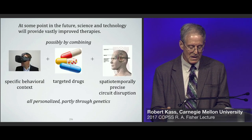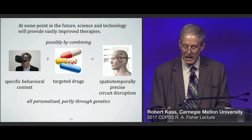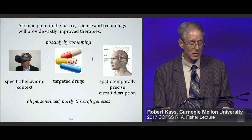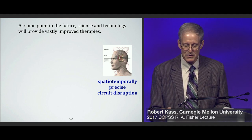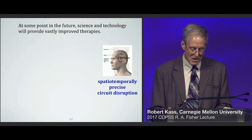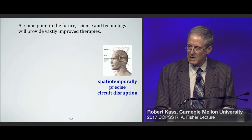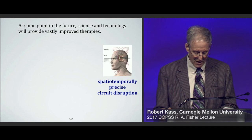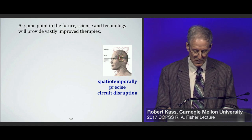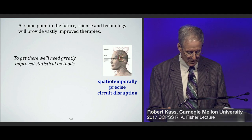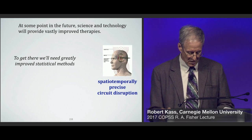We can expect there to exist technologies that combine specific behavioral contexts — perhaps using virtual reality — together with targeted drugs and spatiotemporally precise disruption of neural circuits, all personalized partly through genetics. The figure shows a non-invasive method known as transcranial magnetic stimulation, which is currently being used, but its effects are spatially diffuse. Instead, I'm imagining something that can target less than a cubic millimeter of tissue. Invasive methods for circuit disruption already exist, used mainly in non-human animal experiments. The problem is, to take full advantage of this sort of thing, we'll need greatly improved statistical methods.